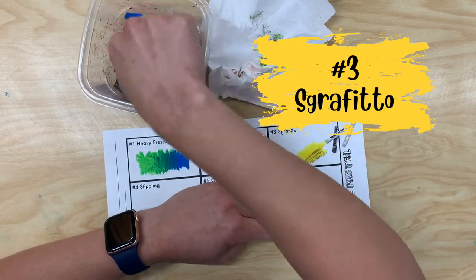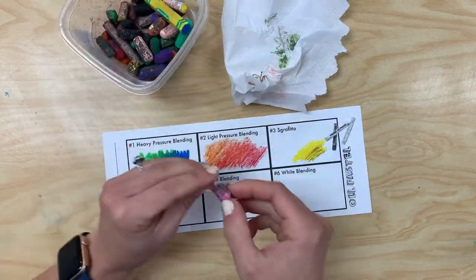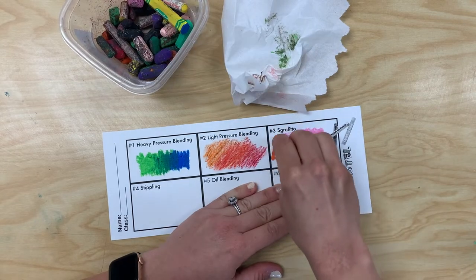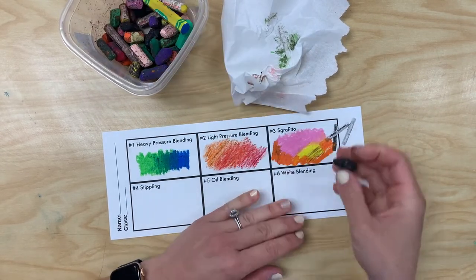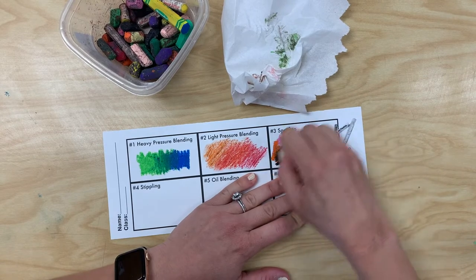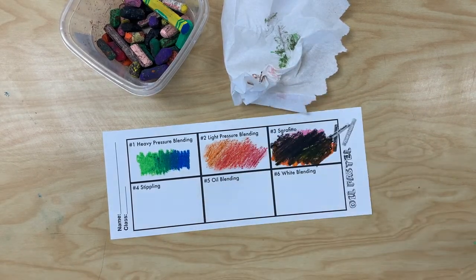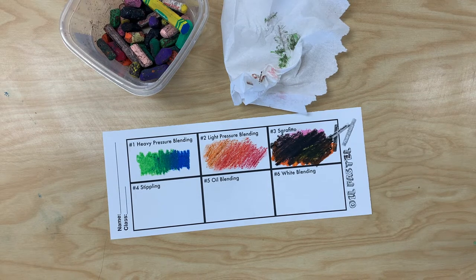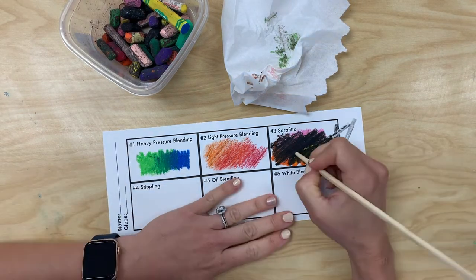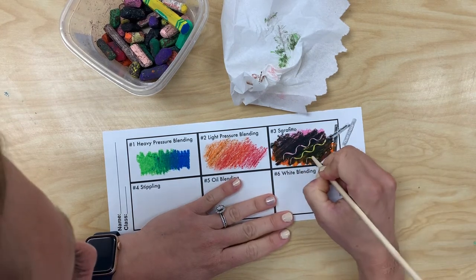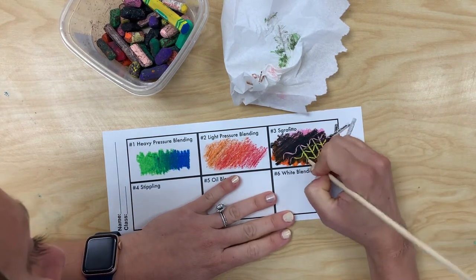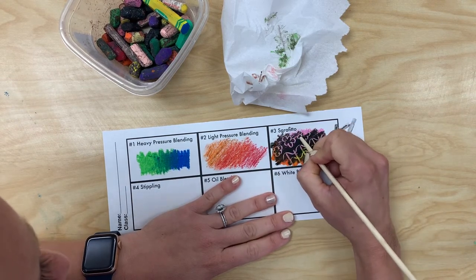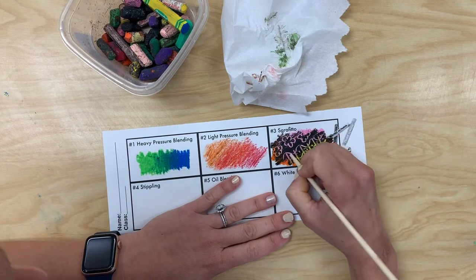The third technique is called sgraffito and this one is really fun. Start by laying down with heavy pressure some lighter colors in the rectangle. Lots of warm colors work well. Then use heavy pressure again to color black on top of those warm colors, covering them completely. Next, use a chopstick to scratch through the surface of the black oil pastel. This will show the lighter colors underneath. It almost becomes a little magical picture as those colors show through.